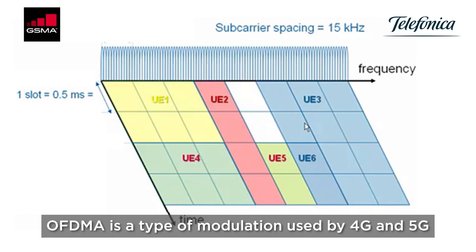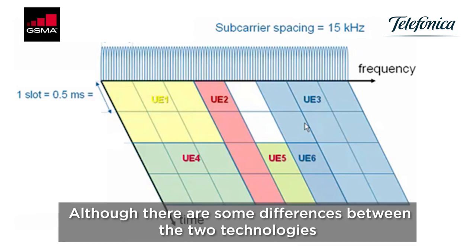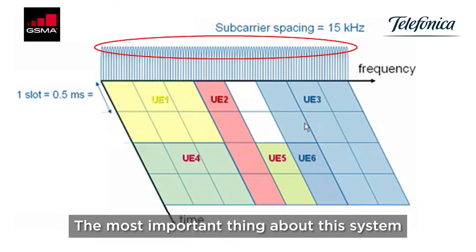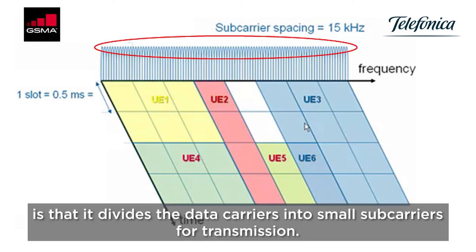OFDMA is the type of modulation used by 4G and 5G, although there are some differences between the two technologies. The most important thing about this system is that it divides the data carrier into small subcarriers for transmission.